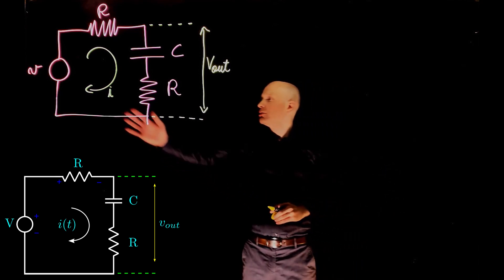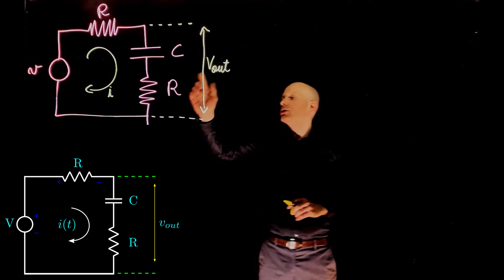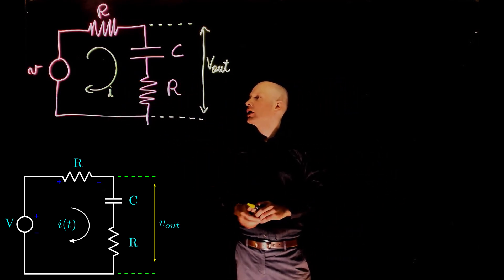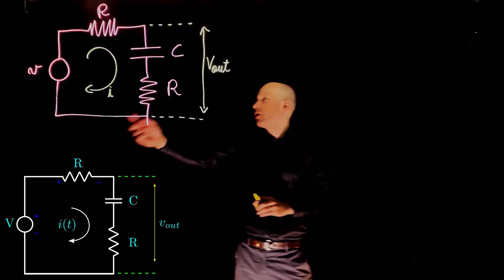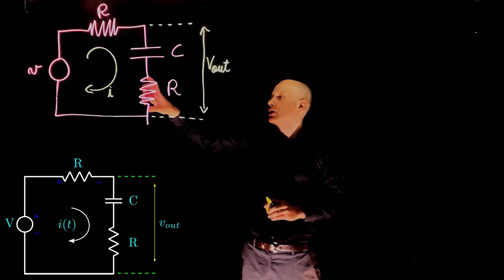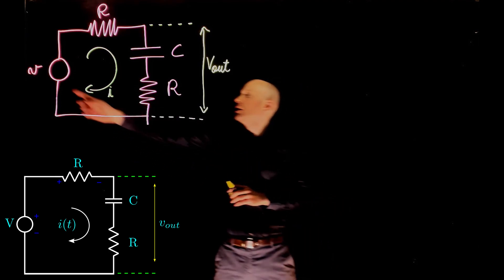We can first now find a relation between I and V, and then find a relation between I and Vout. For this first part, we can write Kirchhoff's Law to that loop. We know that the sum of all voltages here is zero, or the voltage drop across the resistor, the capacitor, and the other resistor added together equals to V.